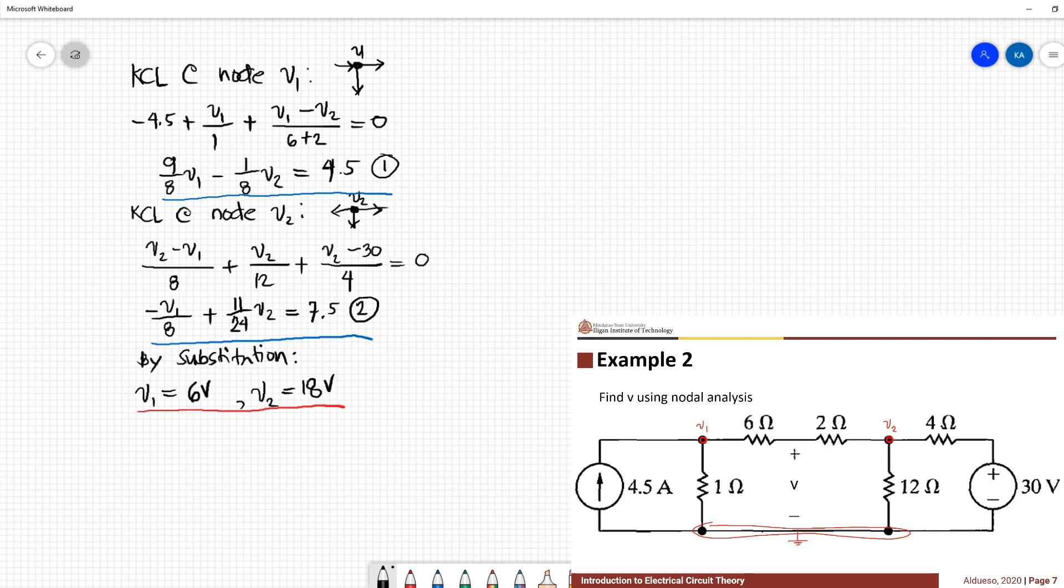So how do we get the value of V? We can apply KVL to this loop right here. So let's label this as loop 1. We need to know the current going through this 6 ohm resistor to know the voltage across this.